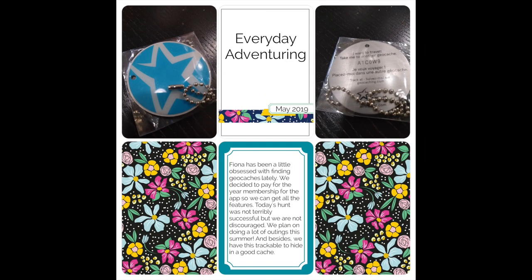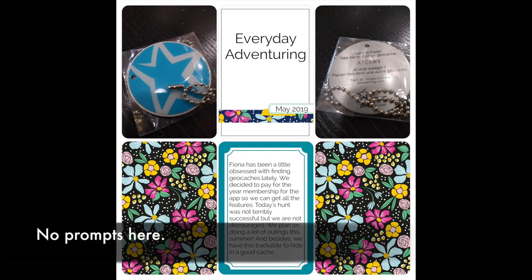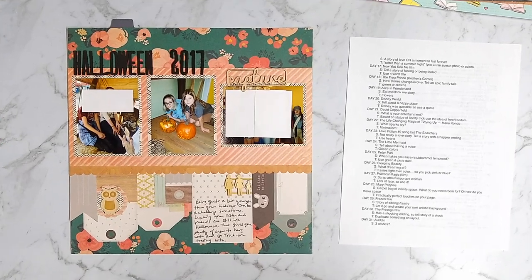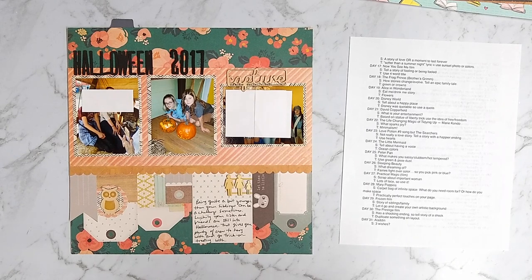Day twenty-nine was based on Frozen. The story prompt was about sibling relationships — tell a story about siblings or family — and the technique prompt was to let it go and create your own artistic background. Day thirty was based on The Prestige, another film I'm not familiar with. The story prompt talked about the shocking ending — tell a story that shocked you — and the technique prompt was to duplicate something on your layout.